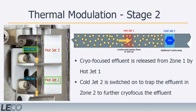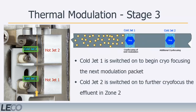During the second stage of modulation, the first stage hot jets will turn on to release the cryofocused effluent. Concurrently, cold jet 2 will turn on and trap the incoming effluent for further cryofocusing. In stage 3, both cold jets are turned on to allow the current modulation packet to completely focus onto the second jet. At the same time, the first cold jet will begin cryofocusing the next packet of column effluent.